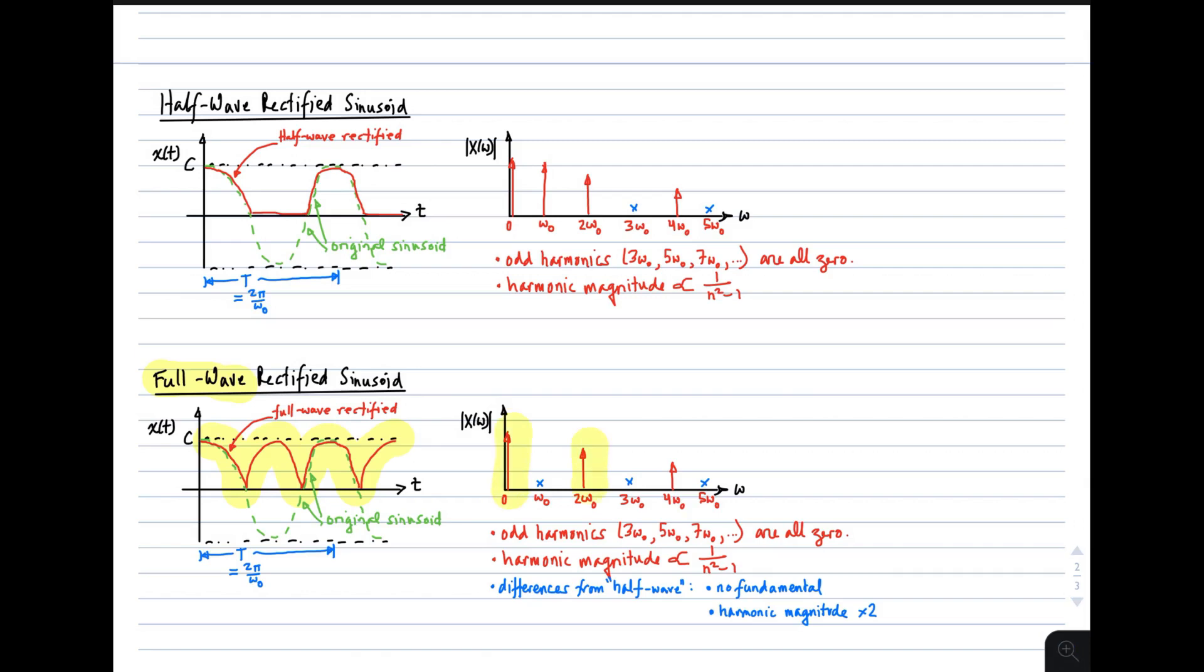We see DC, we see twice the fundamental, that's the second harmonic. And we see the fourth harmonic. The fundamental is completely suppressed. Furthermore, the odd-order harmonics are completely suppressed. So we find that odd harmonics, 3, 5, 7, and so on, are all zero.